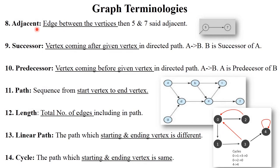Next is adjacent. If A moves to the next node B, then A and B are called adjacent nodes — there is a direct path present between them. Next is successor and predecessor. For A to B: B is called the successor and A is called the predecessor. For example, from source to destination, destination is the successor and source is the predecessor. Next is path — a sequence from start vertex to end vertex. Then length — the total number of edges present in a path. For example, from A to C, there are two edges: A to B and B to C.